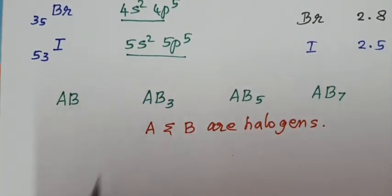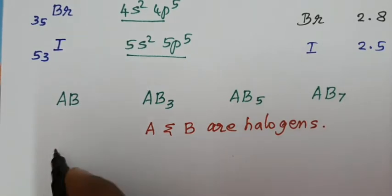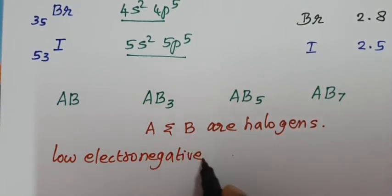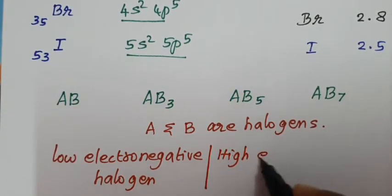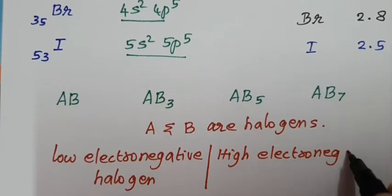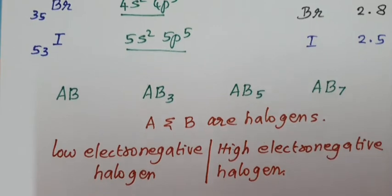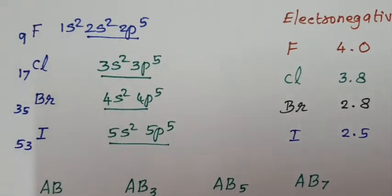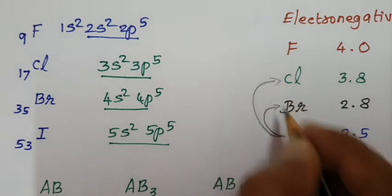When you combine two halogens, which halogen is written first and which one is second? The low electronegative halogen is written first followed by the high electronegative halogen. For example, iodine is the low electronegative halogen; it combines with bromine, chlorine, and fluorine.